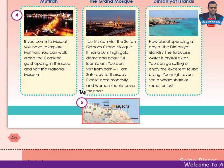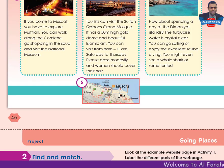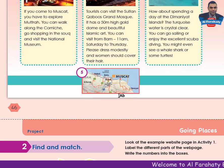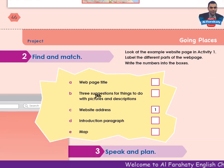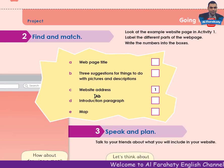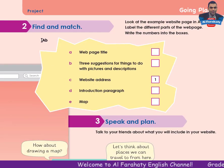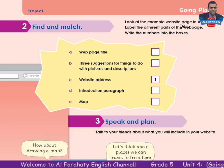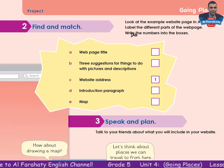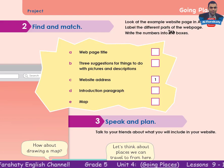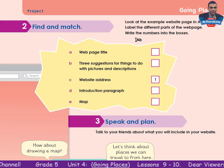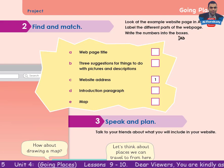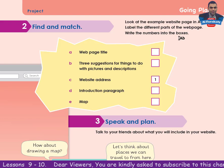Number 5, here you have a map of the place. Let's go to page 47, Activity 2: Find and match. Look at the example website page in Activity 1 and label the different parts of the web page. Write the numbers in the boxes.